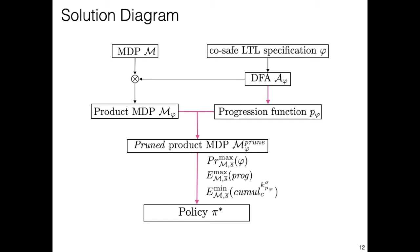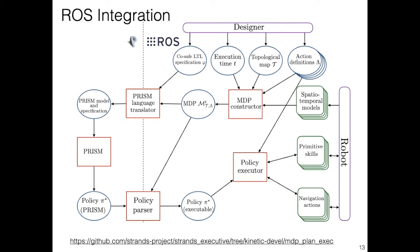Our first contribution is the definition of a progression function over the automaton representation of the Cosafe LTL formula. This progression function formalizes the notion of doing as much as possible. The progression function is then used to prune the product MDP in order to ensure convergence of the three objectives. Finally, we propose an extension of value iteration that optimizes the three objectives in a decreasing order of priority. By doing so, we can obtain an optimal policy for our problem.